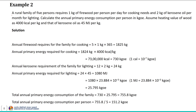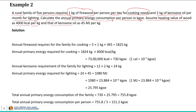As per the example, a rural family of 5 persons requires 1 kg of firewood per person per day for cooking needs, and 2 kg of kerosene oil per month for lighting. We need to calculate the annual primary energy consumption per person in kilogram oil equivalent. The heating value of wood is 4000 kilocalorie per kilogram and that of kerosene oil is 45 megajoule per kilogram.